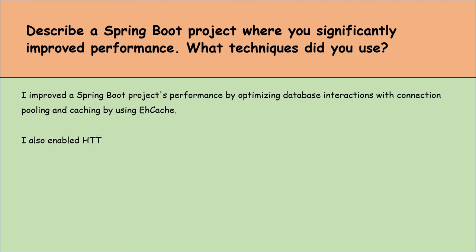Your application needs to process notifications asynchronously using a message queue. Explain how you would set up the integration and send messages. To manage and monitor asynchronous tasks in a Spring Boot application, I would use the @Async annotation to run tasks in the background and CompletableFuture to track their progress and handle results or failures. For thread management, I would configure a ThreadPoolTaskExecutor to customize thread settings. To monitor these tasks, I would integrate Spring Boot Actuator, which provides insights into application health and metrics including thread pool usage. This combination allows me to efficiently run tasks asynchronously, monitor their execution and ensure proper error handling, keeping the app responsive and reliable.